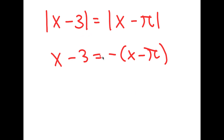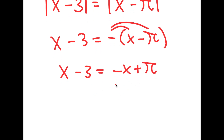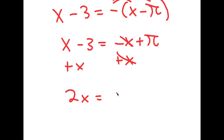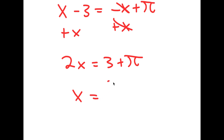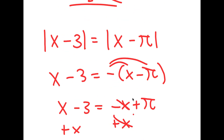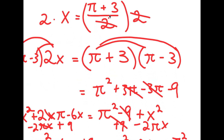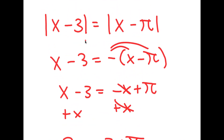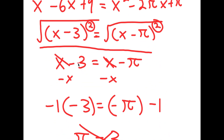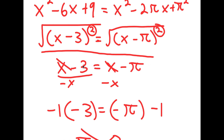So now I get |x minus 3| is equal to |x minus pi|, which means x minus 3 equals negative (x minus pi), or negative (x minus 3) equals x minus pi. If we solve x minus 3 equals negative x plus pi — adding x on both sides — we get 2x equals 3 plus pi, so x equals (3 plus pi) over 2, which is exactly what we started with. The key takeaway is that the square root of a square isn't just the expression itself — it's the absolute value of that expression.